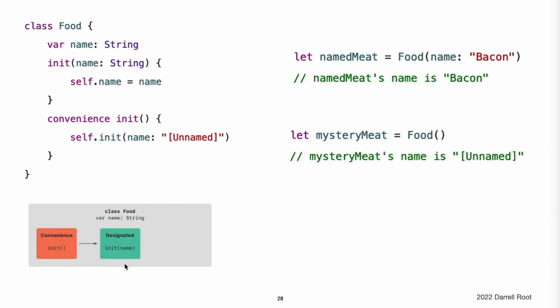Classes do not have a default memberwise initializer, and so the Food class provides a designated initializer that takes a single argument called name. This initializer can be used to create a new Food instance with a specific name. The init(name:) initializer is provided as a designated initializer because it ensures that all stored properties of a new Food instance are fully initialized. The Food class does not have a superclass, and so the init(name:) initializer does not need to call super.init to complete its initialization.